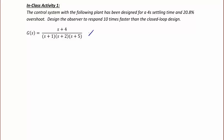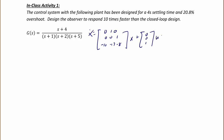The state equation is: x-dot equals the matrix [0, 1, 0; 0, 0, 1; -10, -17, -8] times x plus [0; 0; 1] times u. And y equals [4, 1, 0] times x.